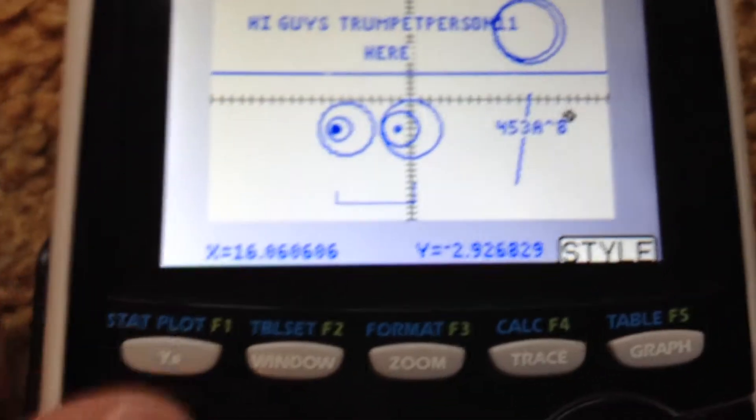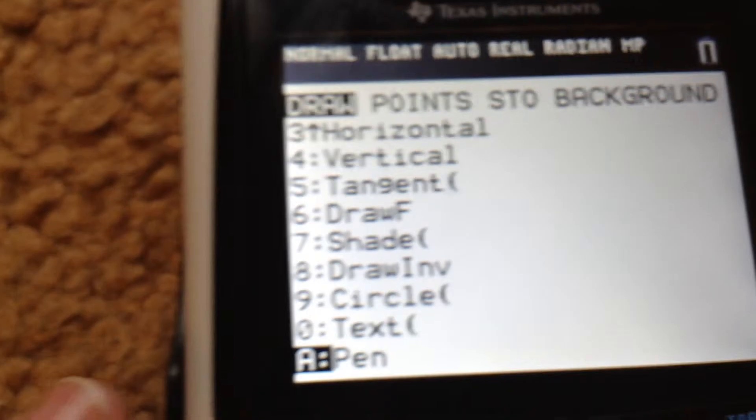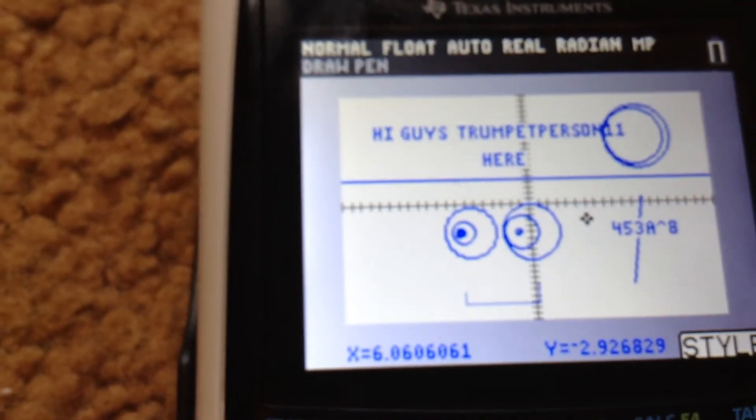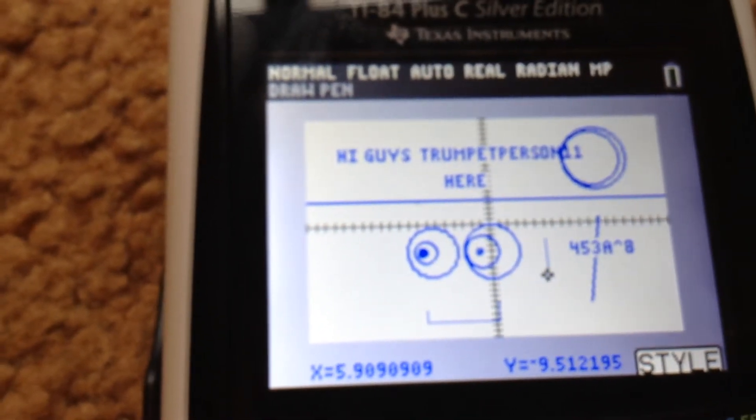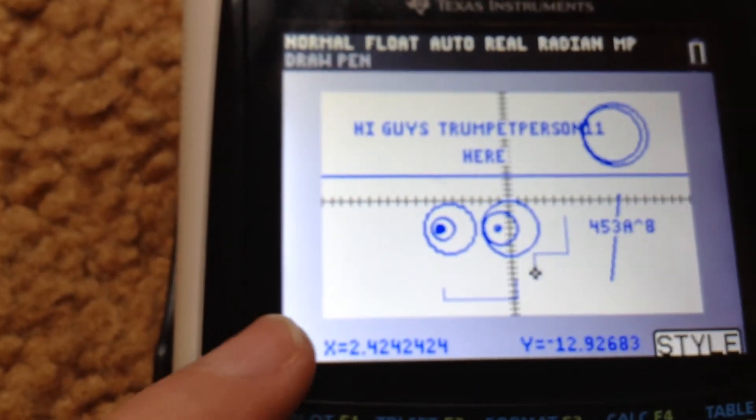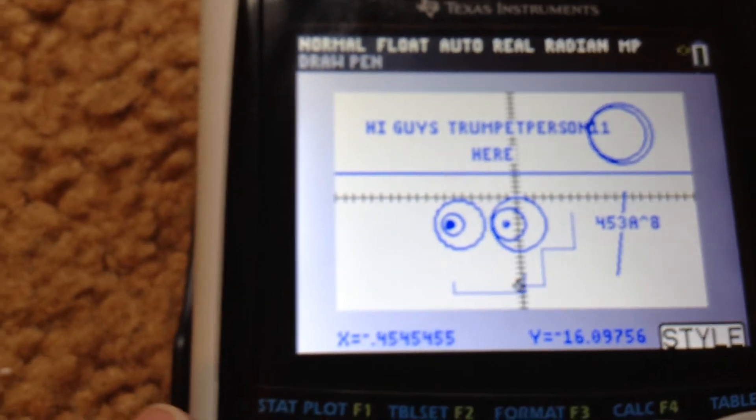And then the next feature, the last one, is pen. Pen is just you press enter, and it'll start a line, and then you can have an angle on your line and keep going. So you can make stairs or something cool.